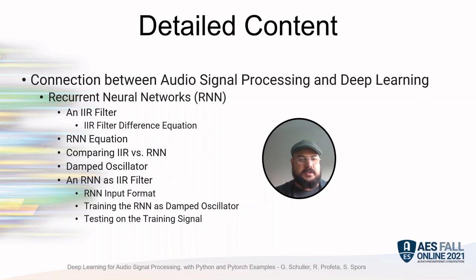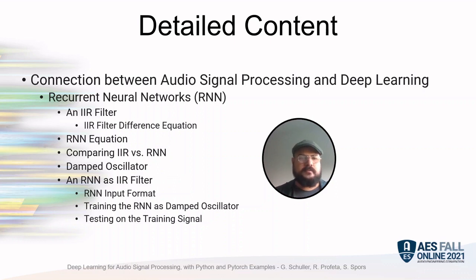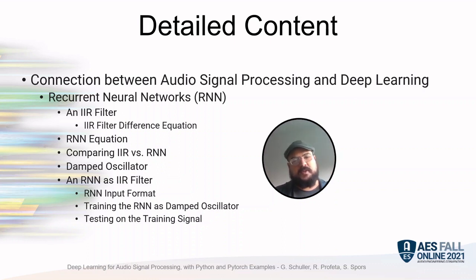We will cover an example using a damped oscillator, and we'll see an RNN as an IIR filter. We'll discuss the recurrent neural network input format, how to train the RNN as a damped oscillator, and how to test on the training signal.